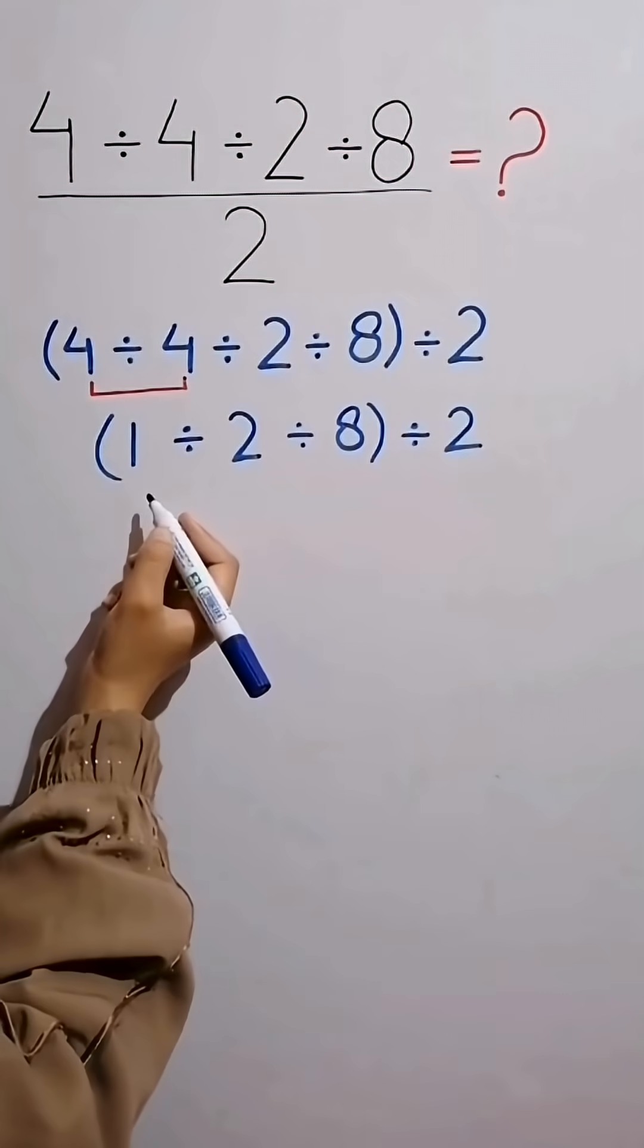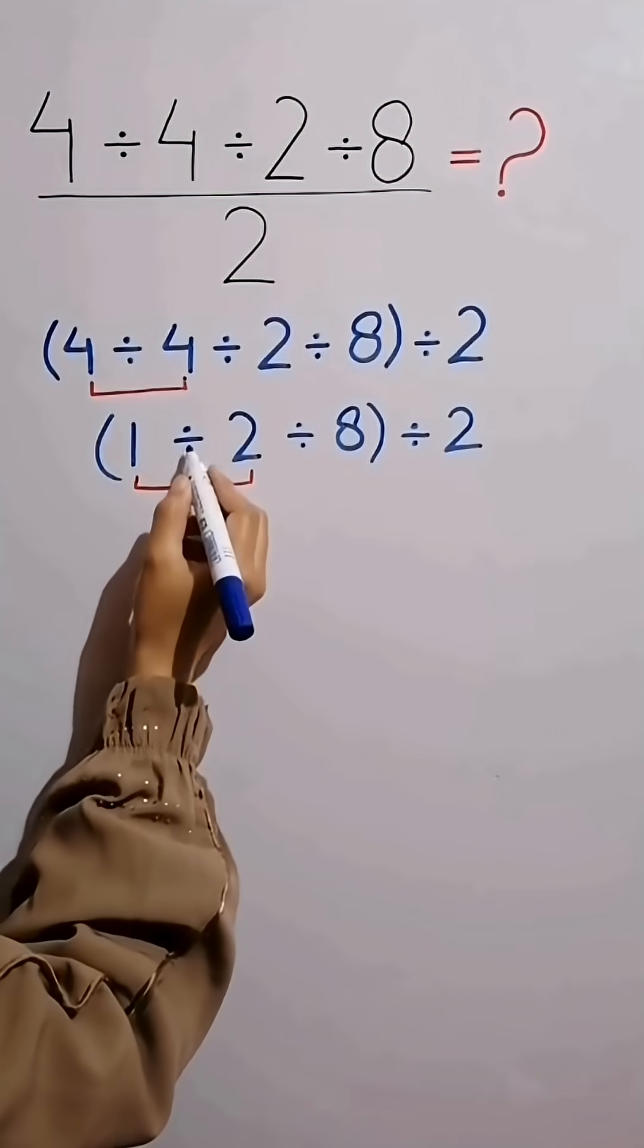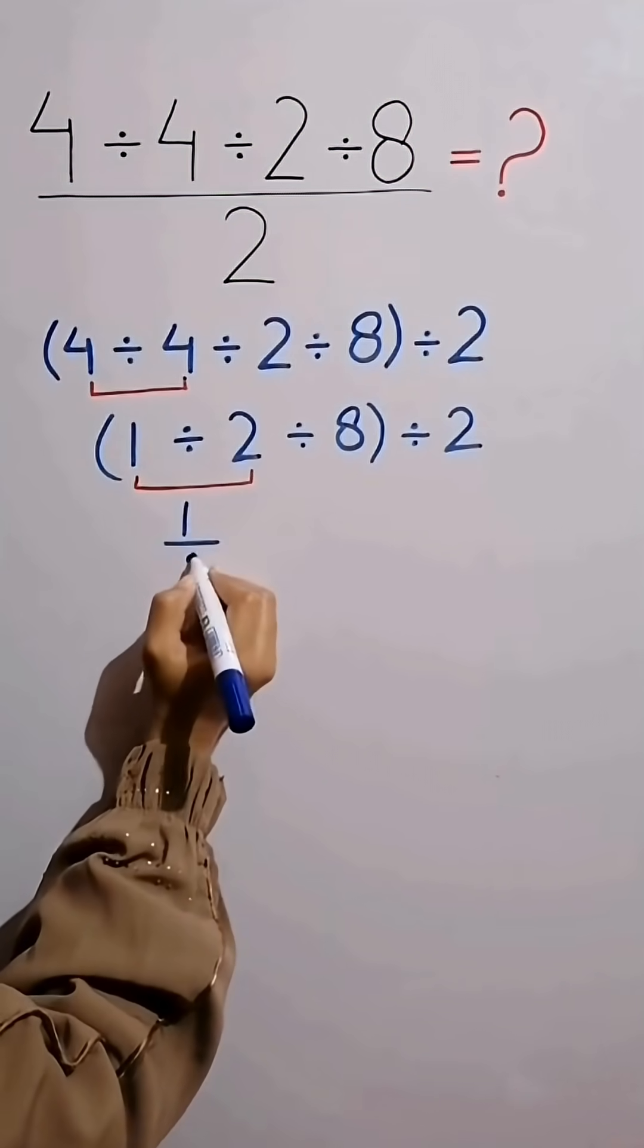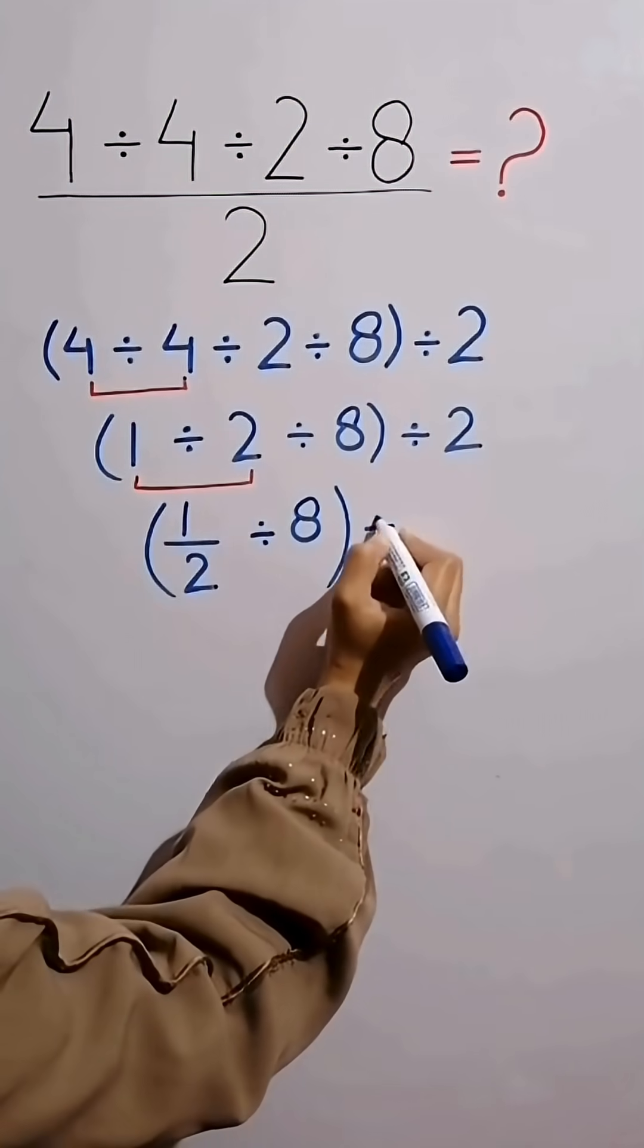Again we start from the left side of the expression and simplify. Now we simplify 1 divided by 2 in fractional form as 1 over 2, divided by 8 inside the parentheses, then divided by 2.